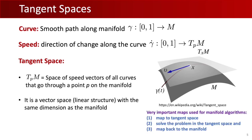Because the tangent space has a Euclidean structure, we can leverage it to perform our usual Euclidean operations on manifolds. The meta-algorithm is to map points to the tangent space, perform operations there, and then map back to the manifold. When the manifold has specific structure, we can define maps from and to the tangent space called the exponential and logarithmic maps.